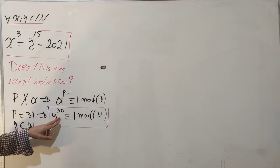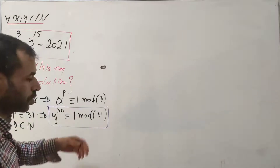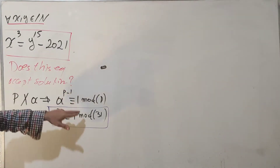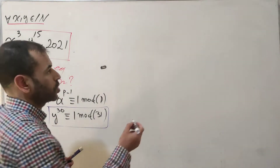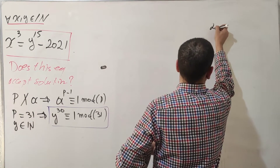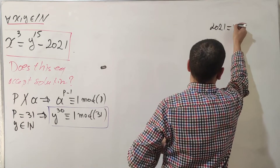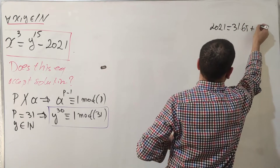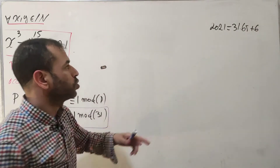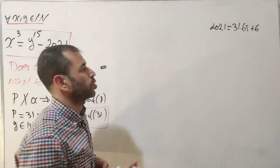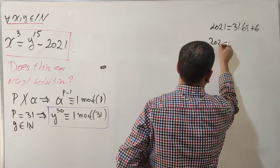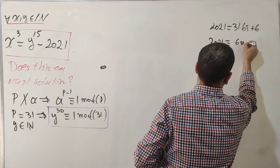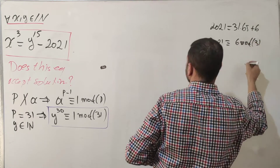Before reducing the equation mod 31, notice that 2021 = 31 × 65 + 6, so 2021 is congruent to 6 mod 31.